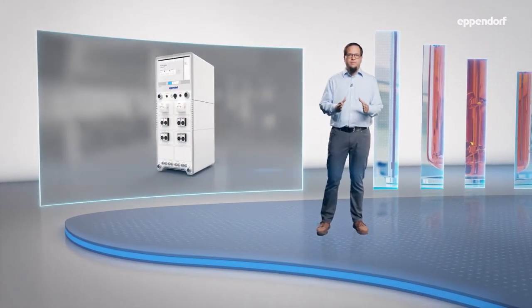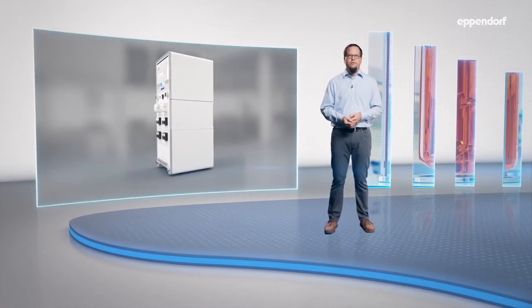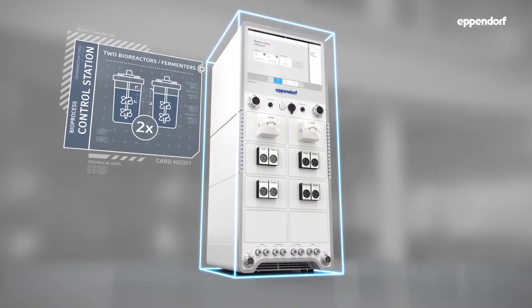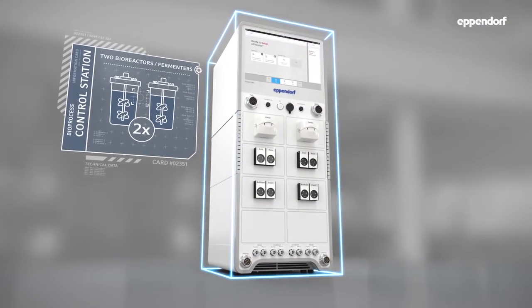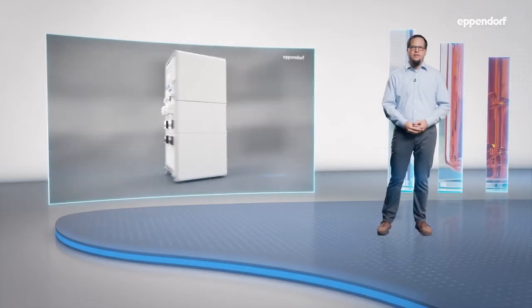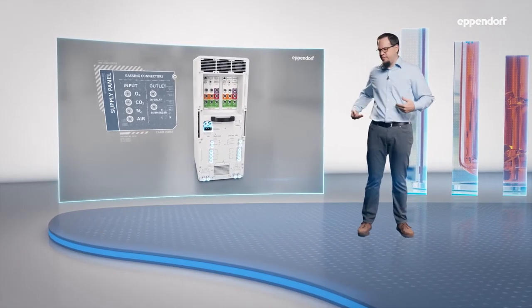The compact design was drafted by user experience specialists and validated with feedback from our customers to achieve the highest efficiency. Frequently used elements like touch display, pumps or vessel actuators are located at the front, while rarely used elements like supply connectors for chilled water, gas and electricity are located at the back.